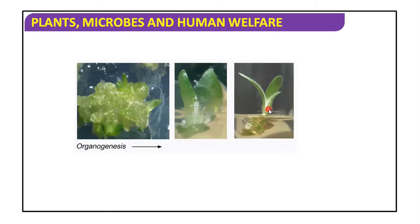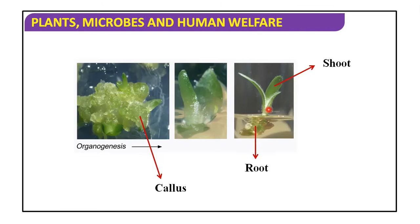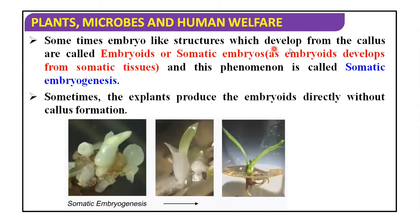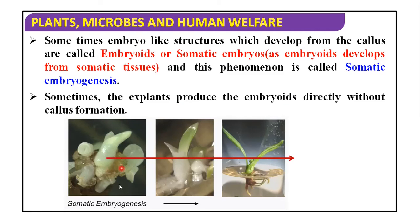This is the callus, and these are the organs of the plant — shoot and roots. Sometimes embryo-like structures which develop from callus are called embryoids or somatic embryos, and this phenomenon is known as somatic embryogenesis. Sometimes the explant can produce embryoids directly without callus formation — this is also known as somatic embryogenesis.